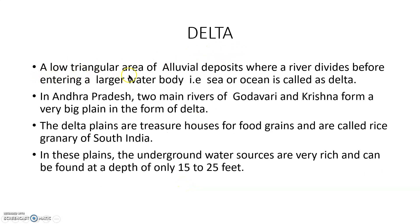Delta: a low triangular area where a river divides before entering a large water body — sea or ocean — is called a delta. All rivers finally mix with seas or oceans, flowing in small streams before entering. In Andhra Pradesh, the two main rivers, Godavari and Krishna, form a very big plain in the form of a delta.